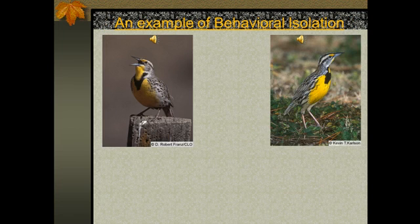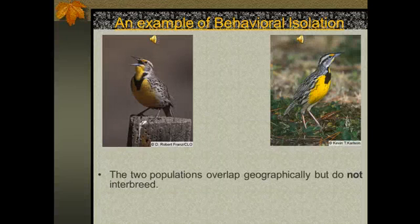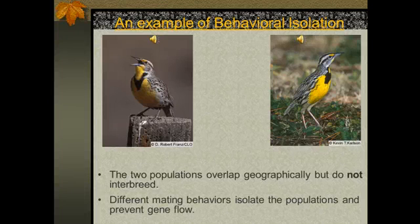We've already seen one example in the western and eastern meadowlarks. It was their courtship behavior — the songs that the males sing to attract females. This is a case where the two populations overlap geographically, but they do not interbreed because of their behavior.